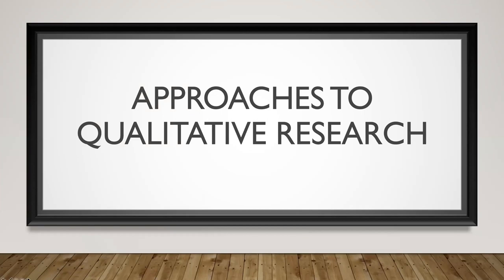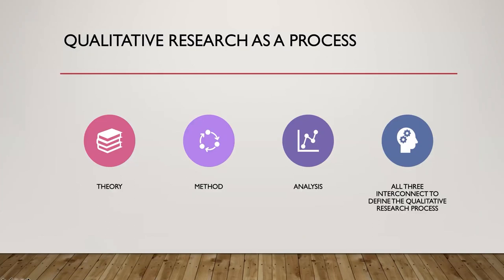So we'll talk about a few approaches to qualitative research. Typically, before you start a qualitative research project, you want to choose a theory or methodological point of view that's going to guide the research. That's going to help you decide on methods. Your methods will help you decide on the analysis plan. It's important to note that in qualitative research, all three of these are interconnected. If you don't pay enough attention to each one of these points of view, your study is going to suffer as a result.